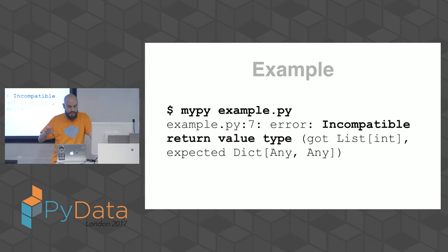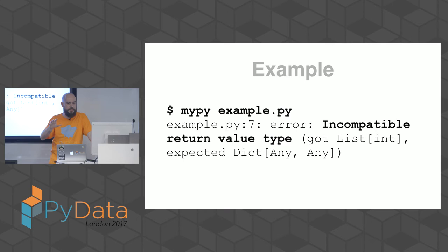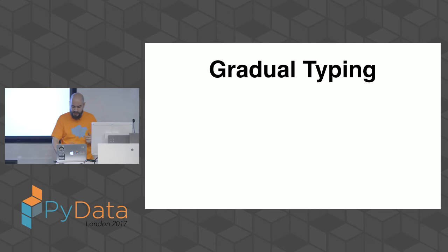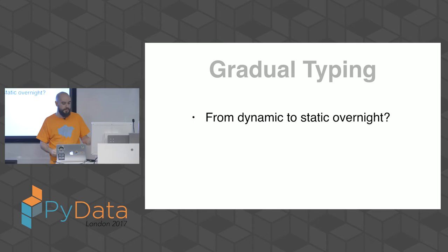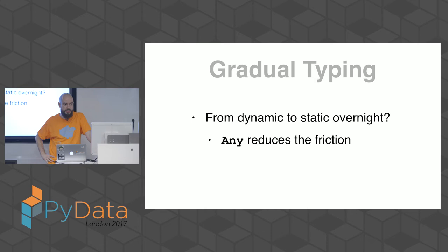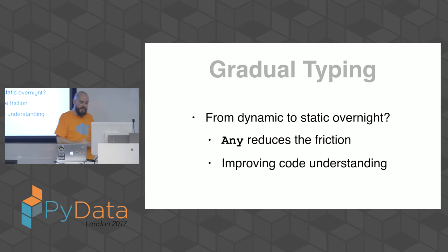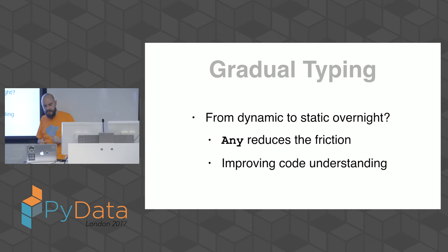In the error messages, a dictionary declared without specifics defaults to Dict[Any, Any]. This introduces the concept of gradual typing: you don't go from dynamic to static overnight, you do it gradually. The Any data type reduces friction — when you're not sure about your code base, you can place Any and refine it later through iterations.